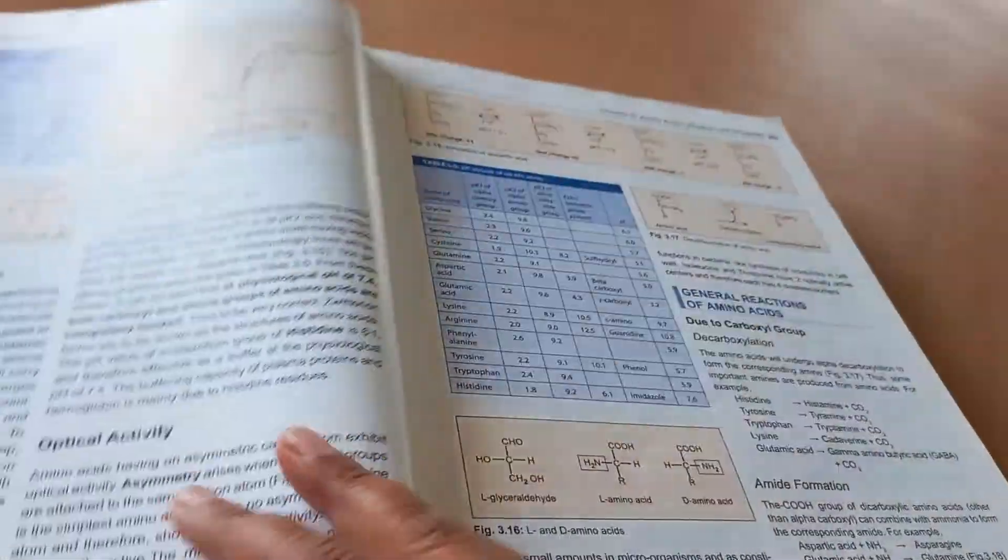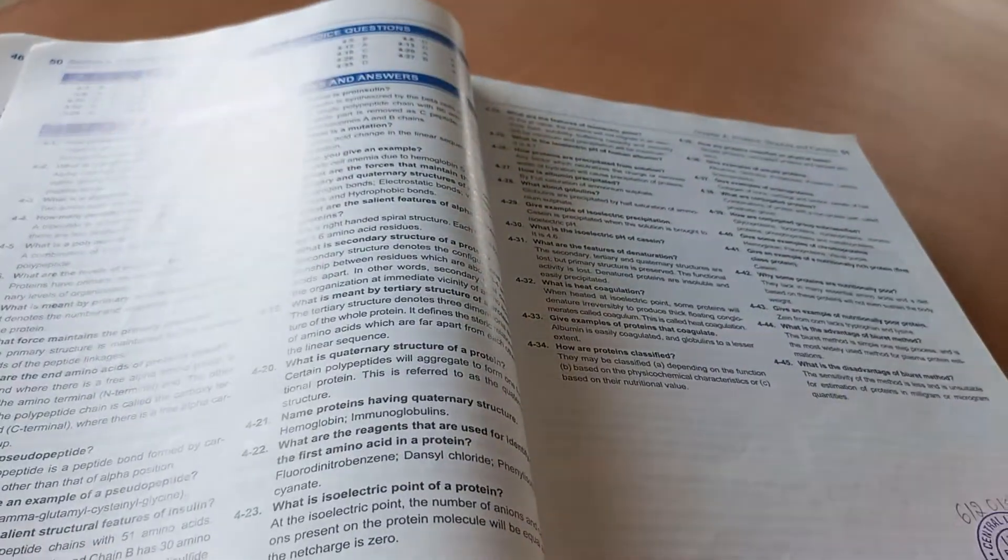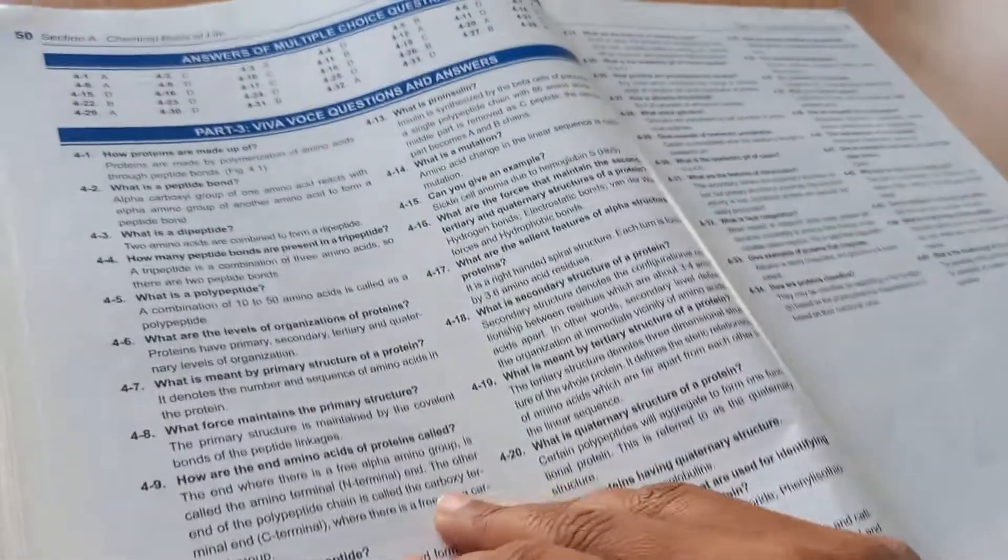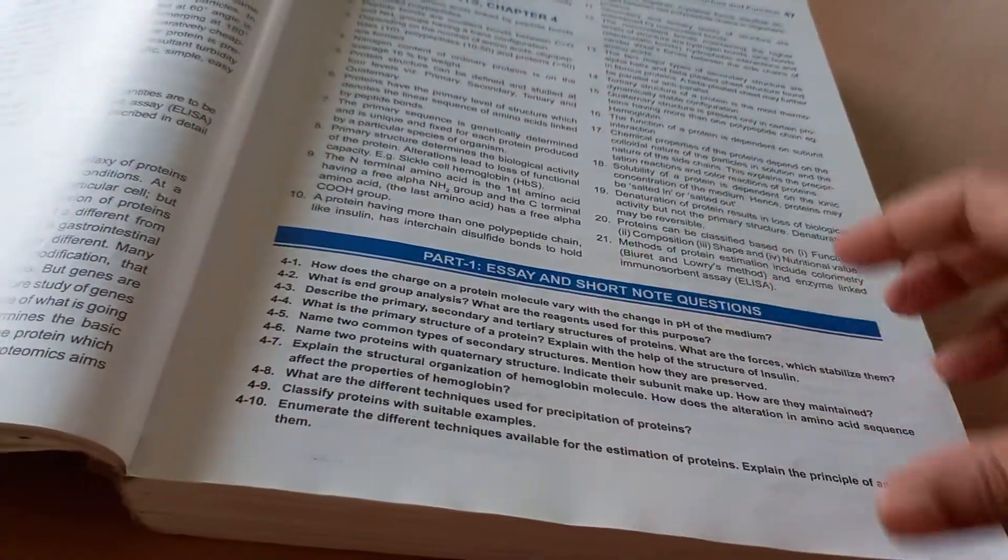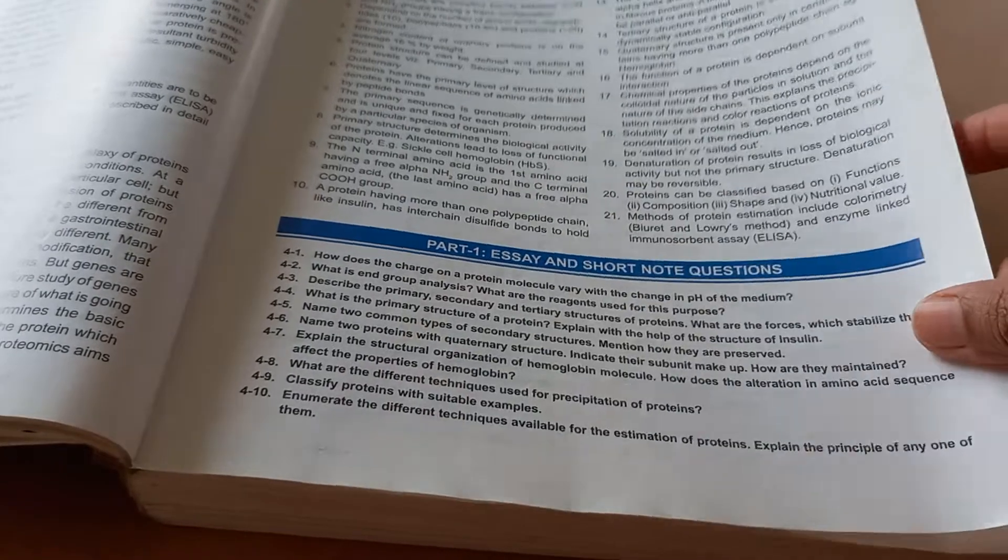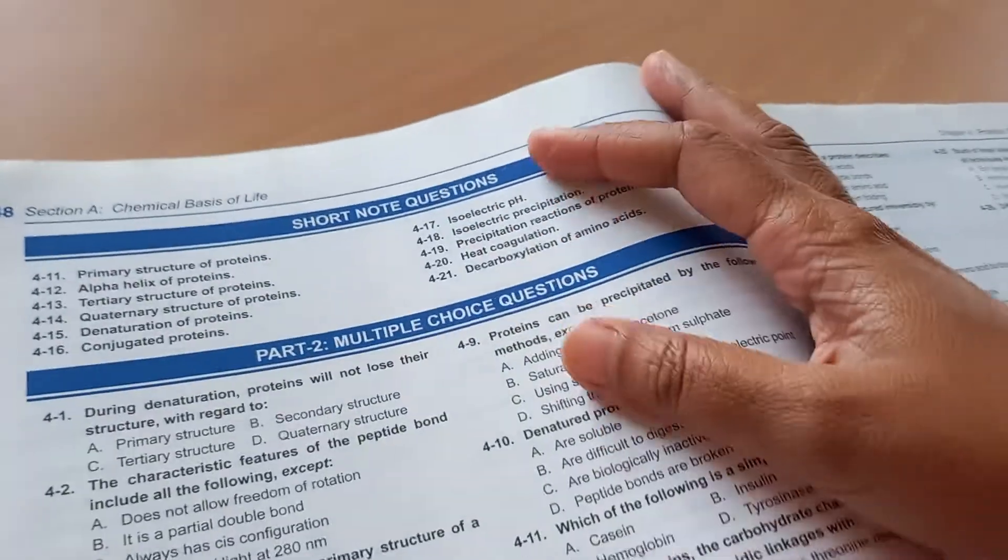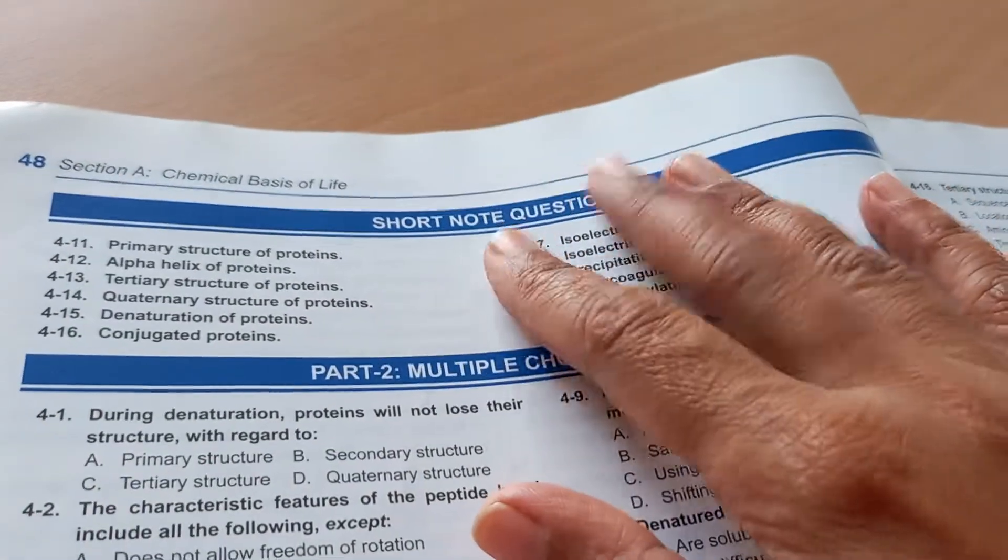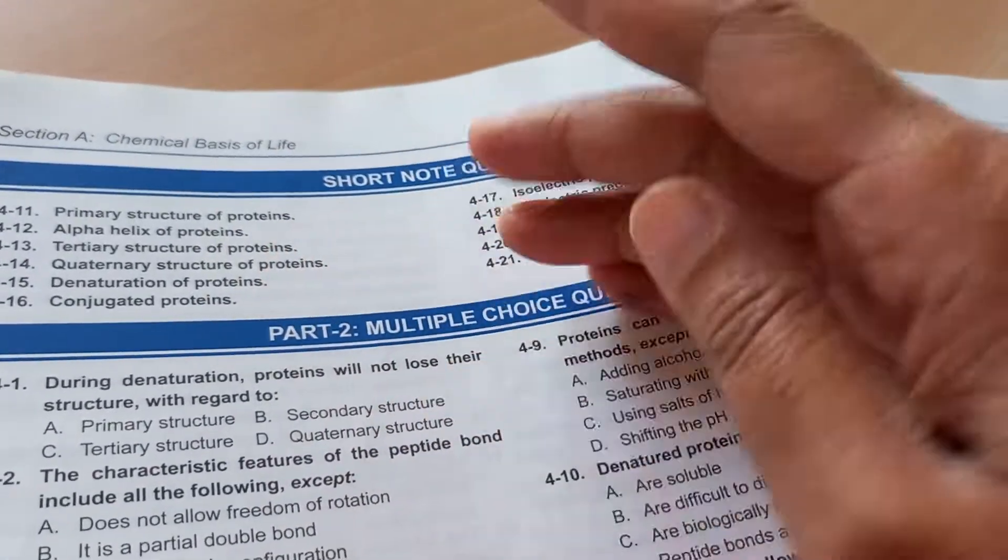At the end of each chapter they are giving you everything that you need. See, they are giving you essay and short note questions, but which of this is high priority they didn't say. Then they are telling you short note questions. Always know the answer to short note questions because this is your scoring. Just write few words and you'll get marks, so you should always try to answer these questions.